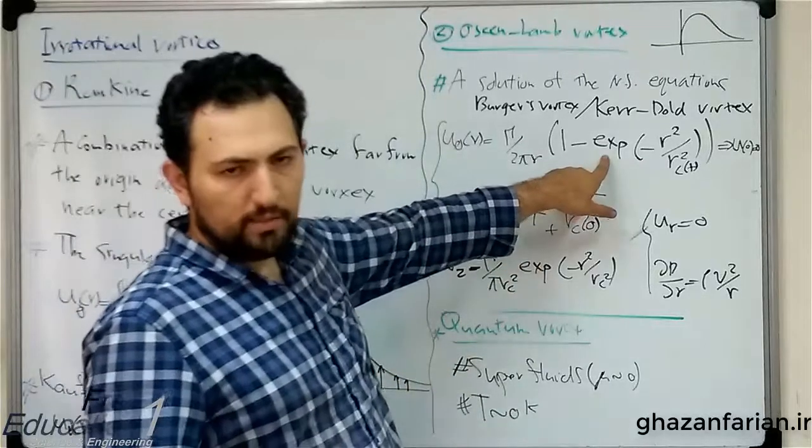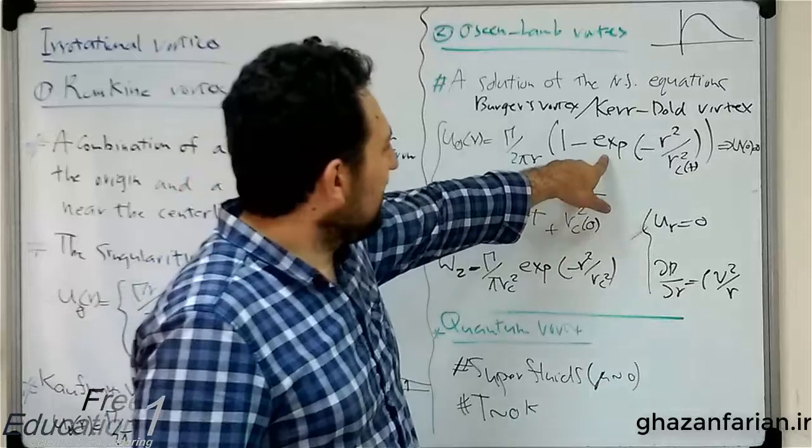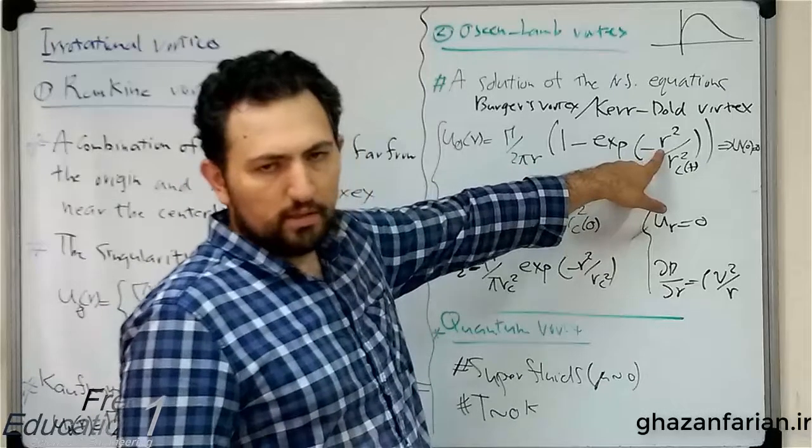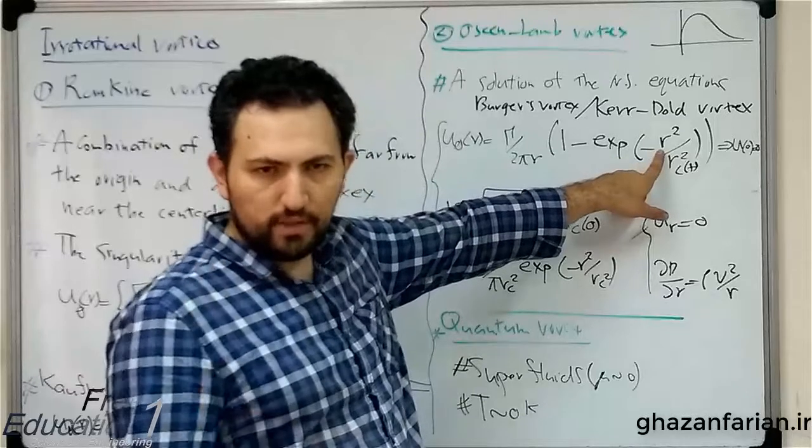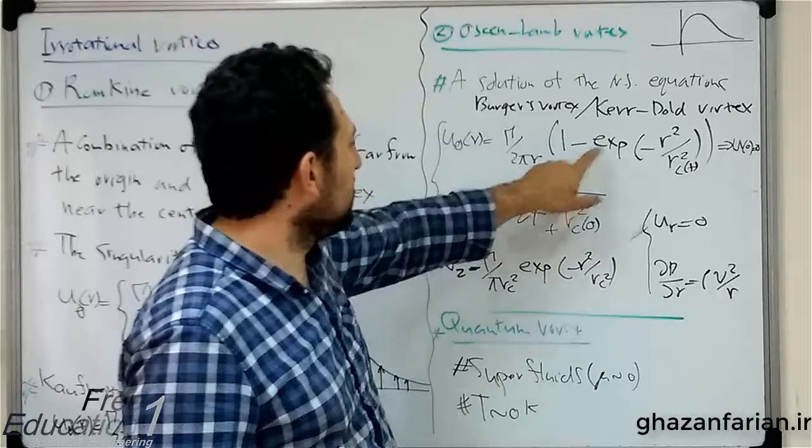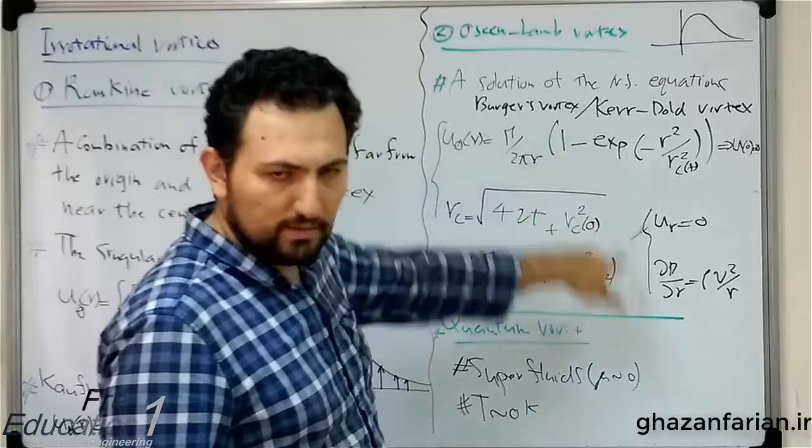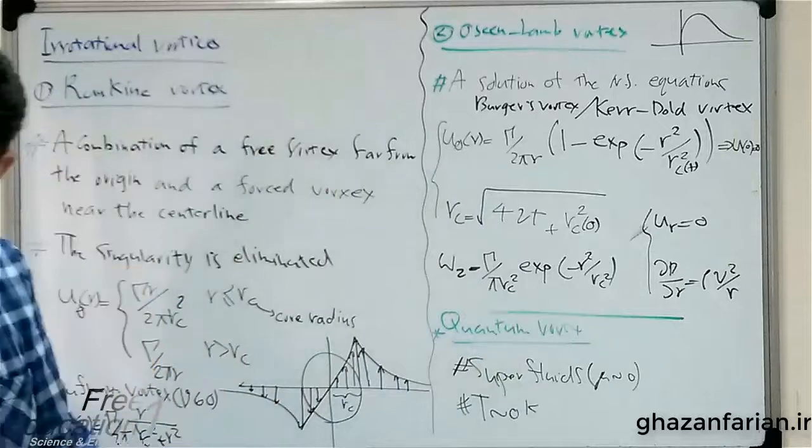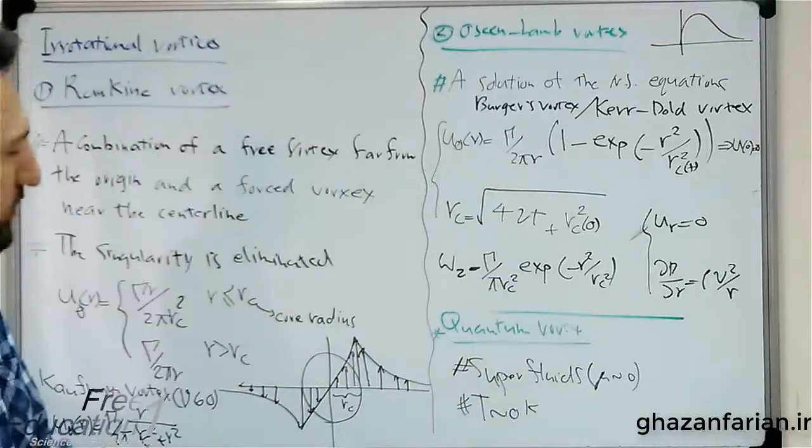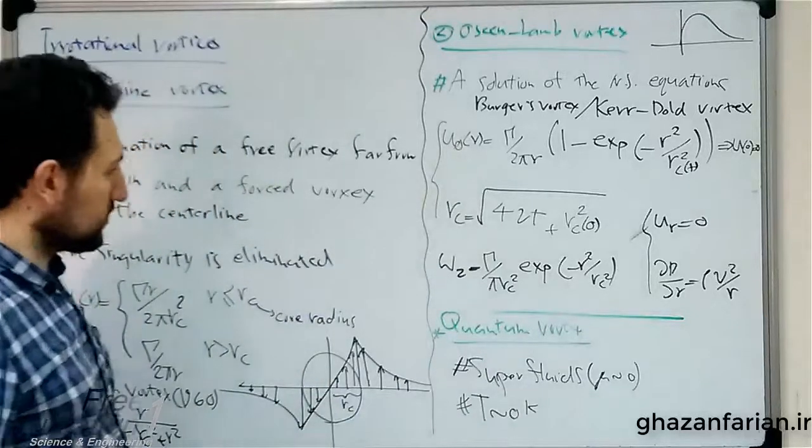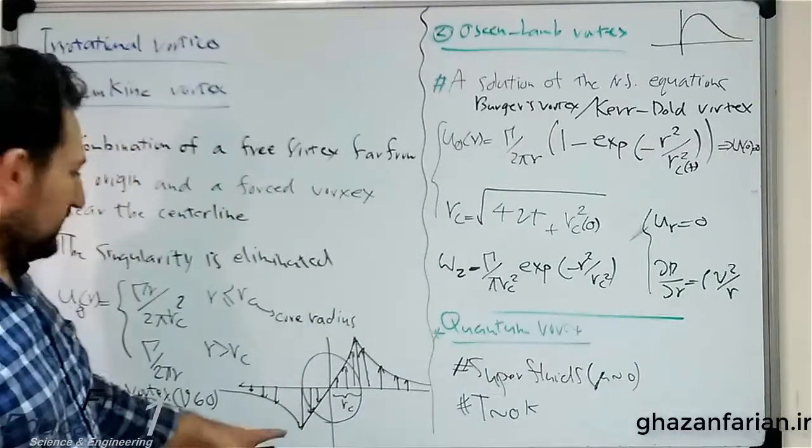You see the exponential behavior of the velocity. If you replace R in this relation with zero at the center of the vortex, this will become one, and one minus one is zero. So based on this relation, which is computed by the solution of the Navier-Stokes, the full Navier-Stokes equation, the velocity at the centerline is zero, similar to this case.